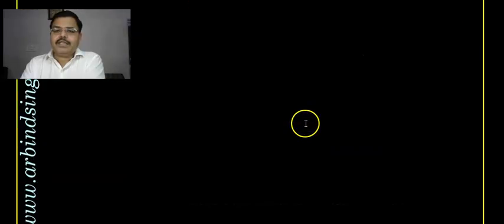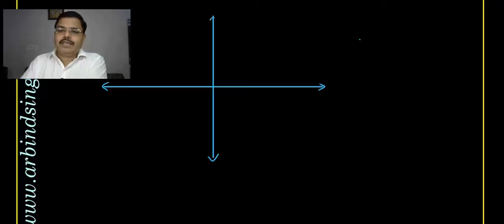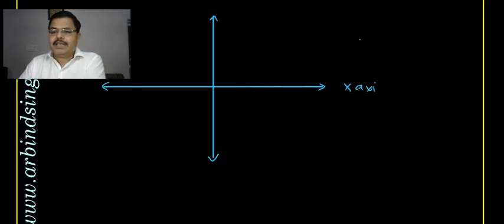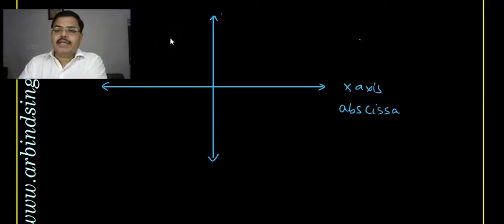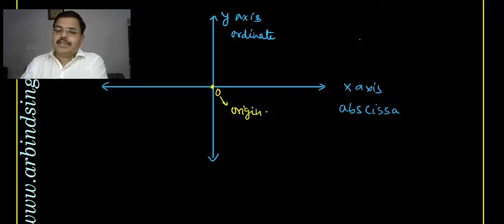Let us discuss what the Cartesian system is and how to represent the position of a point. There are two perpendicular lines — the horizontal line is called the x-axis and the vertical line is called the y-axis. The point of intersection where these two perpendicular lines meet is called the origin. The origin is the point of reference, and the two axes are the lines of reference.